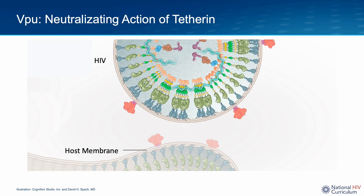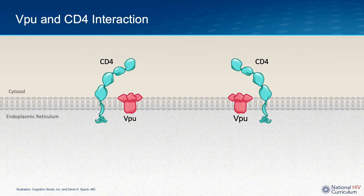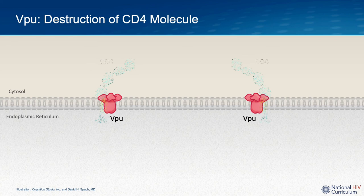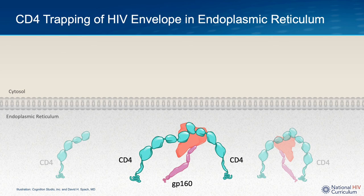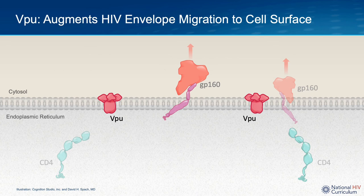The second major role of VPU is to downregulate expression of the host CD4 receptors on the cell surface. This occurs due to an interaction between VPU and CD4 molecules inside the cell, predominantly in the endoplasmic reticulum. When VPU binds to the CD4 receptor, this initiates a series of reactions resulting in proteasomal degradation of the CD4 molecules. For HIV, the VPU-mediated destruction of CD4 is beneficial since CD4 normally traps the HIV envelope precursor protein GP160 in the endoplasmic reticulum region. So with more production of VPU, there is less CD4 remaining in the endoplasmic reticulum, and GP160 can more freely migrate to the cell surface to be part of the newly forming HIV particle.